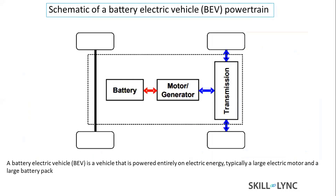Here is the schematic of a battery electric vehicle. The power battery is where electrical energy is stored. That energy transfers from the battery to the motor, which generates torque and power, and that is transferred to the transmission and then to the wheels through the drive shaft. This is the complete battery electric vehicle schematic.